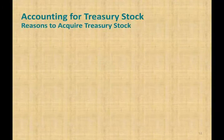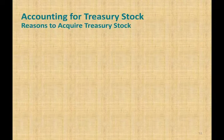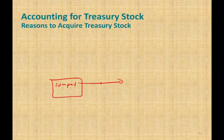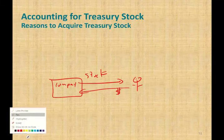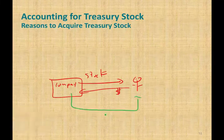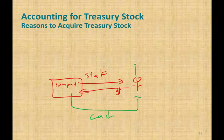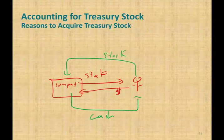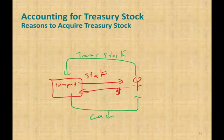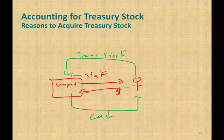Today's lesson is about accounting for treasury stock. What is the big idea? What is treasury stock? In prior sessions, we were looking at a company issuing stocks to investors, and investors were giving money back to the company. Now we are going to reverse this process. We are going to take cash and buy back the stock from the investor, and the investor will give us back the stock. When we issued the stock, we called it common stock; when we buy it back, we call it treasury stock.